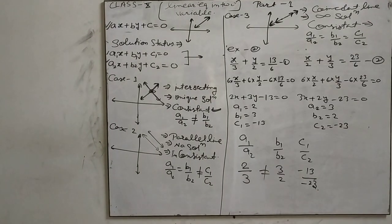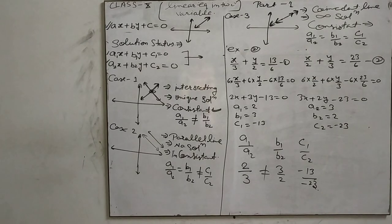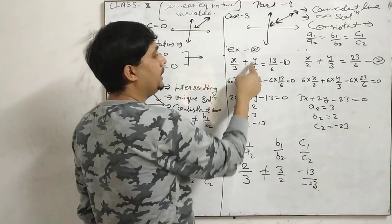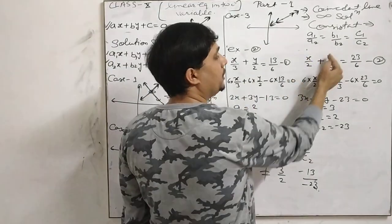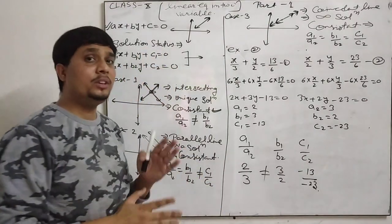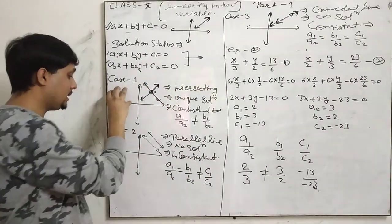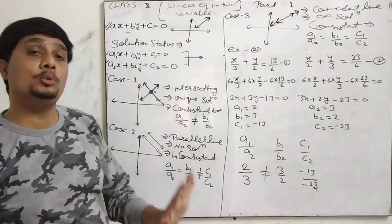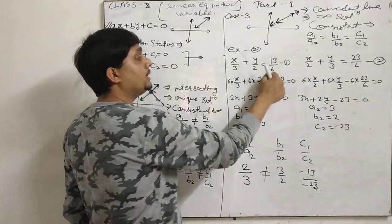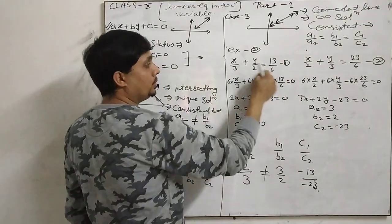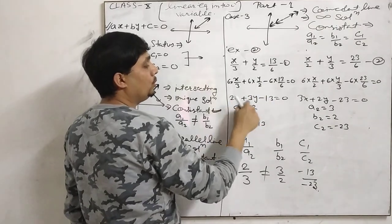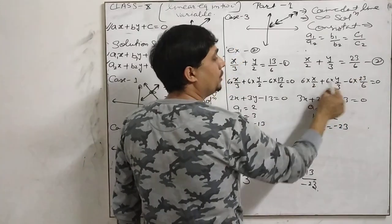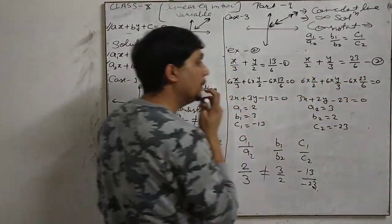This is the second example. We have x upon 3 plus y upon 2 equals 13 upon 6, and a second equation in the same form. Without graphing, we want to determine whether it is case 1, case 2, or case 3. We take the LCM, which is 6, and multiply through.